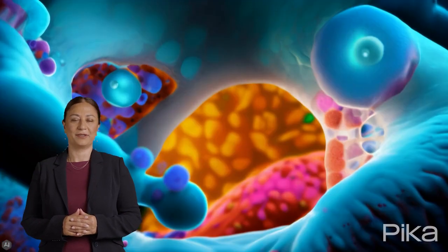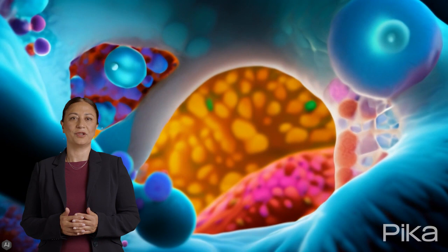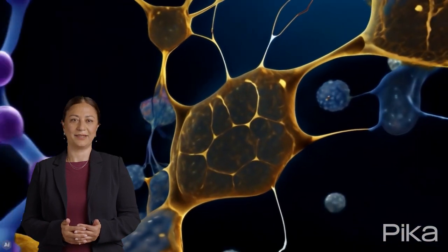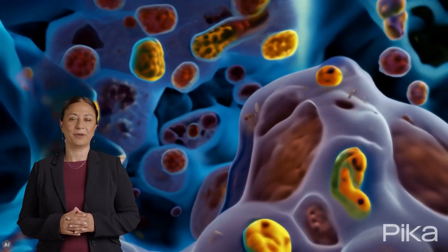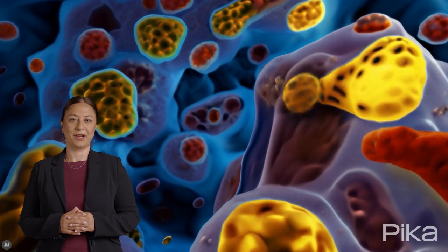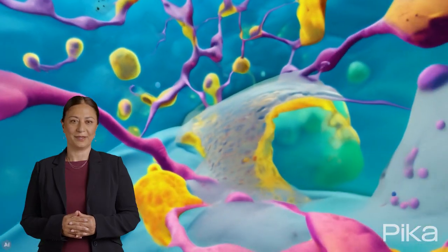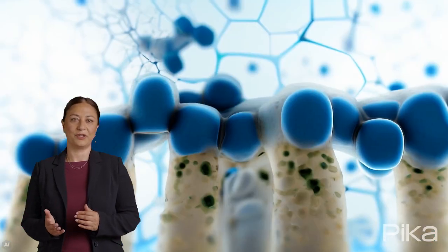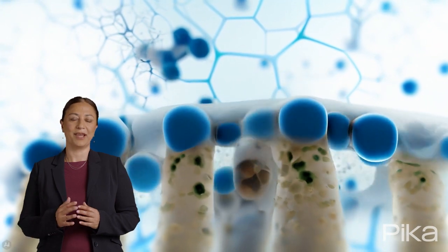In plant cells, chloroplasts perform a similar fundamental function, but through photosynthesis, converting sunlight into chemical energy stored in glucose, a process that not only fuels the plant cell but also produces oxygen, a by-product vital for life on Earth.